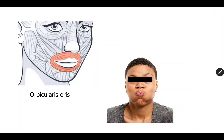Orbicularis oris is very similar in arrangement to orbicularis oculi, with a circumferential arrangement of muscle fibers, but it is located around the opening of the mouth. When this muscle contracts, it can tightly close the opening of the mouth, and it can be used to puff the mouth with air. If the muscle is paralyzed on one side or both sides, air will leak out from the oral cavity. During clinical examination, you can ask the person to puff the mouth and push the cheek on one side to test the strength of the orbicularis oris muscle.